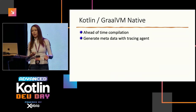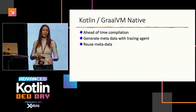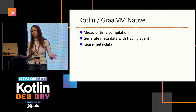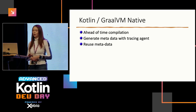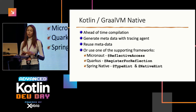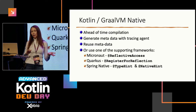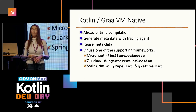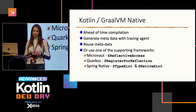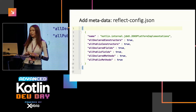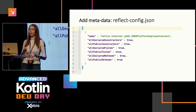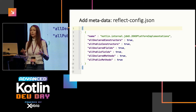What we need to do is provide metadata. You can generate it with the tracing agent, reuse existing metadata from open-source GitHub repositories, or create and share your own. Alternatively you can use a supporting framework — Micronaut, Quarkus, or Spring Native are now production-ready and provide annotations instead of metadata. For our example we add metadata directly so we don't pollute the comparison. This is an example of what I needed to add to get coroutines working — just that small amount.